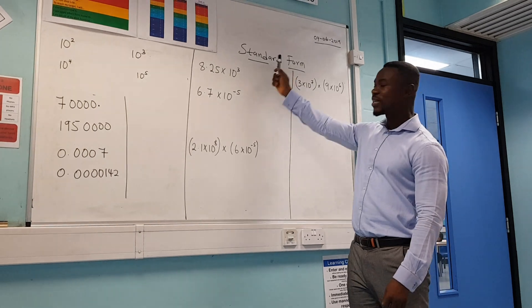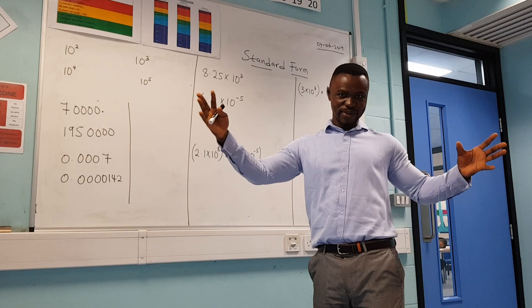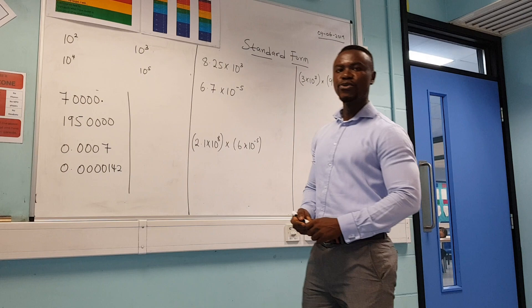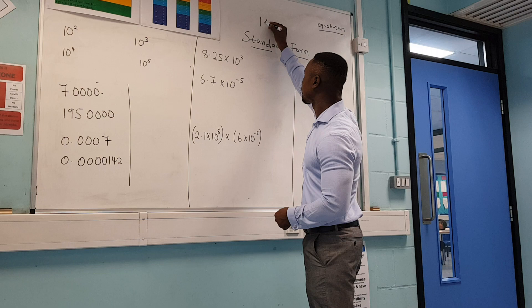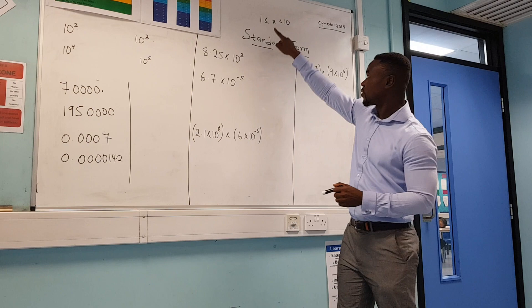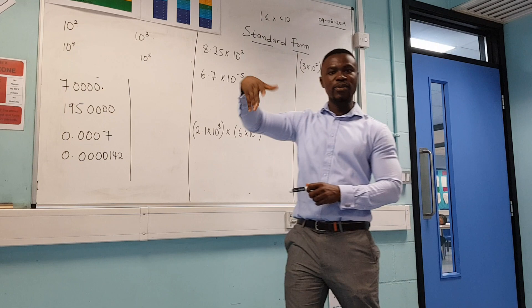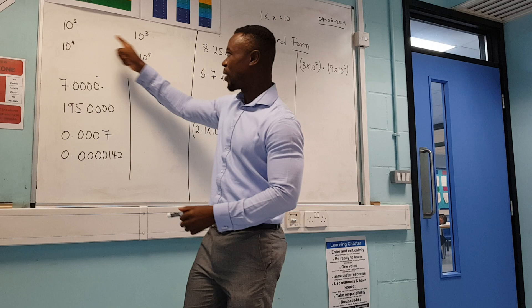Today we're looking at standard form. Standard form is just a way of writing large numbers or very small numbers using the powers of 10. There is a rule you have to remember: standard form has to be between 1 up to 10. This means 1 is included but 10 is not, so you can go all the way up to 9.999 — you will never reach 10 when writing in standard form.